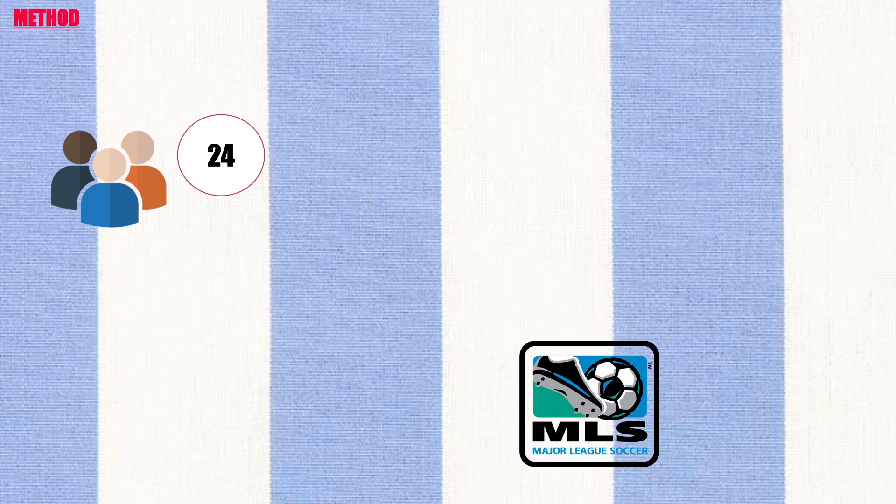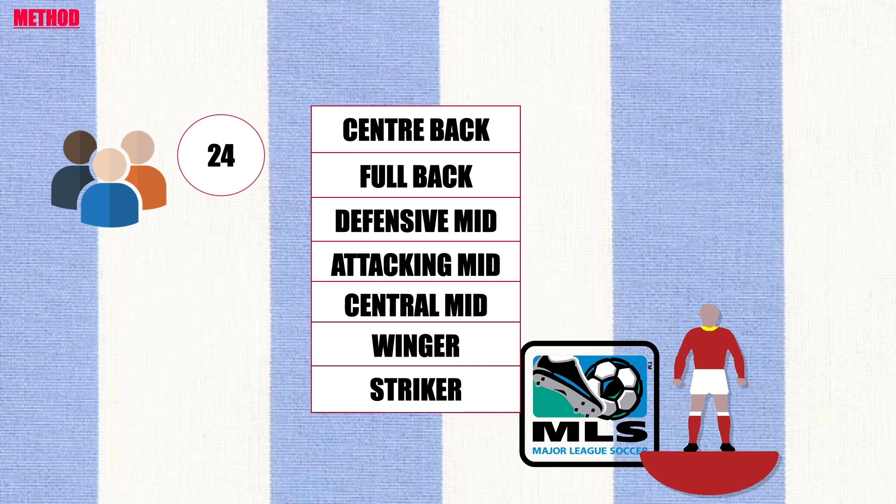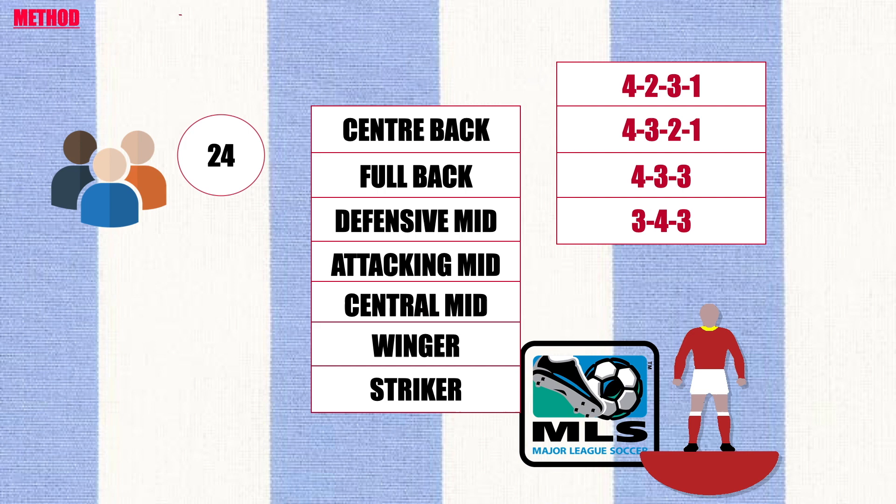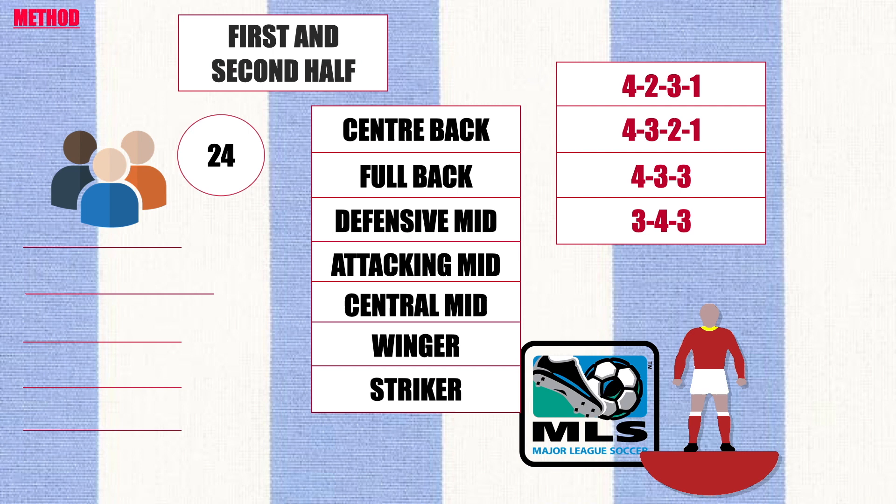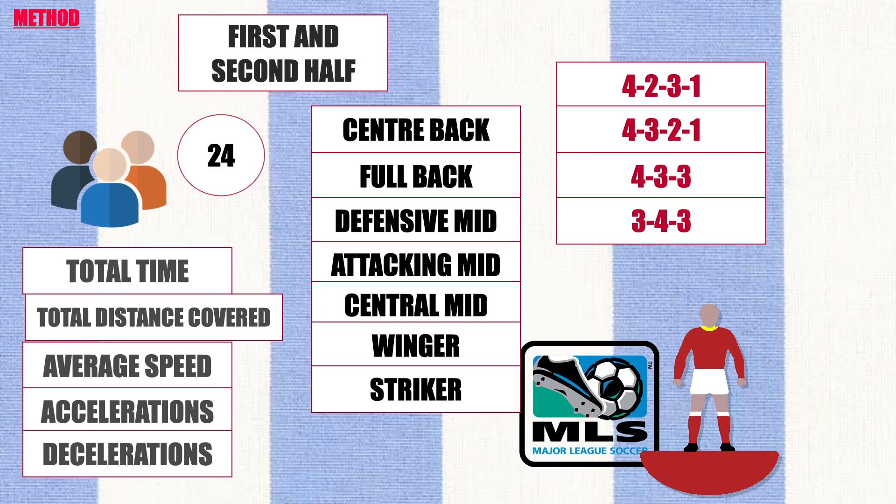Formations were assigned prior to collection and cross-referenced with an online football analysis database. Data was sorted by playing position, tactical formation, and period of play. GPS metrics were collected, and peak intensities over specified durations were calculated using relative speed. The maximum value for each peak intensity variable was used to calculate each of the five moving averages.